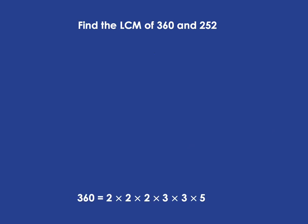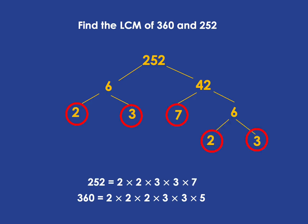Let's look at 252. It can be split into 6 times 42. 6 is 2 times 3. Those are both prime. 42 is 7 times 6. 7 is prime. 6 is 2 times 3. And those are both prime. And so we've got 252 written as a product of prime factors: 2 times 2 times 3 times 3 times 7.